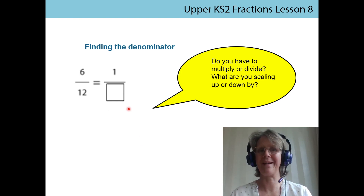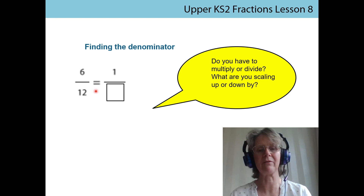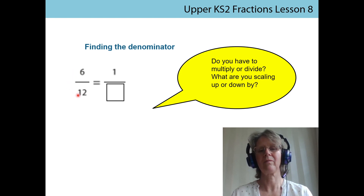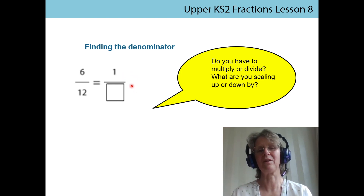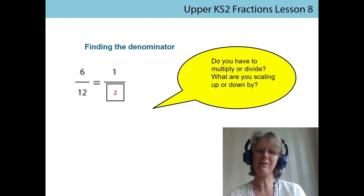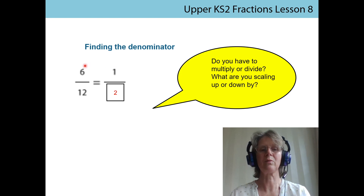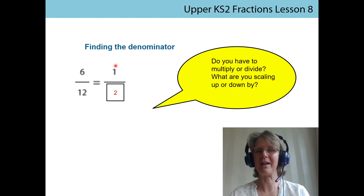Let's move on to the next slide where we're going to look at missing denominators. We know we've got to keep this new fraction as the same proportion as the original because we're looking for an equivalent fraction — same value, different appearance. Our relationship here is from 6 to 12: we scaled it up by 2. We're going to have to do the same, so 1 times 2 is 2. Could we have done it by dividing? Yes — 6 divided by 6 is 1, and we'd need to do the same: 12 divided by 6 is 2.